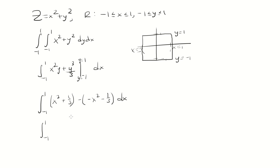So you have x squared minus negative x squared is 2x squared. 1 third minus negative 1 third is 2 thirds.